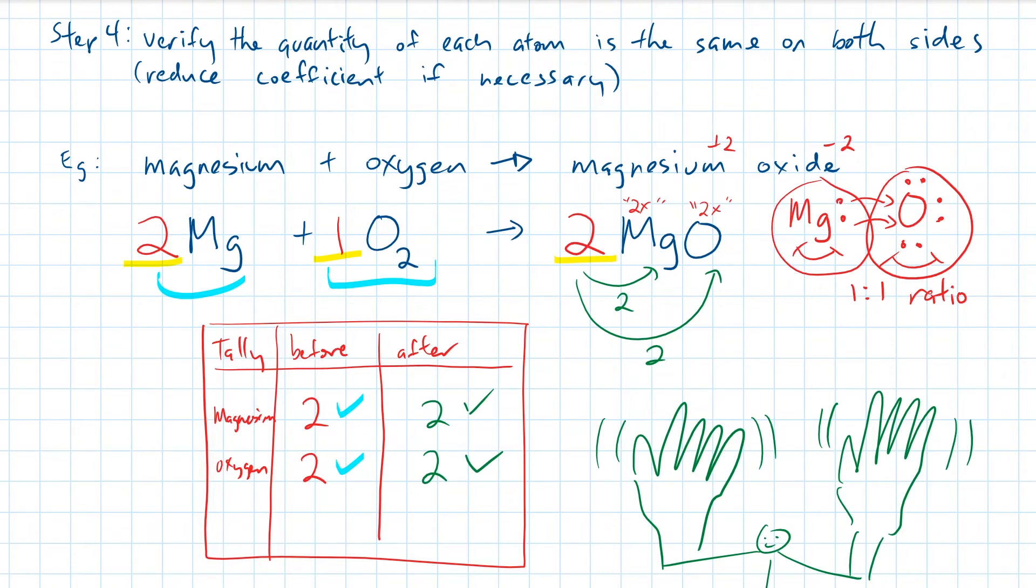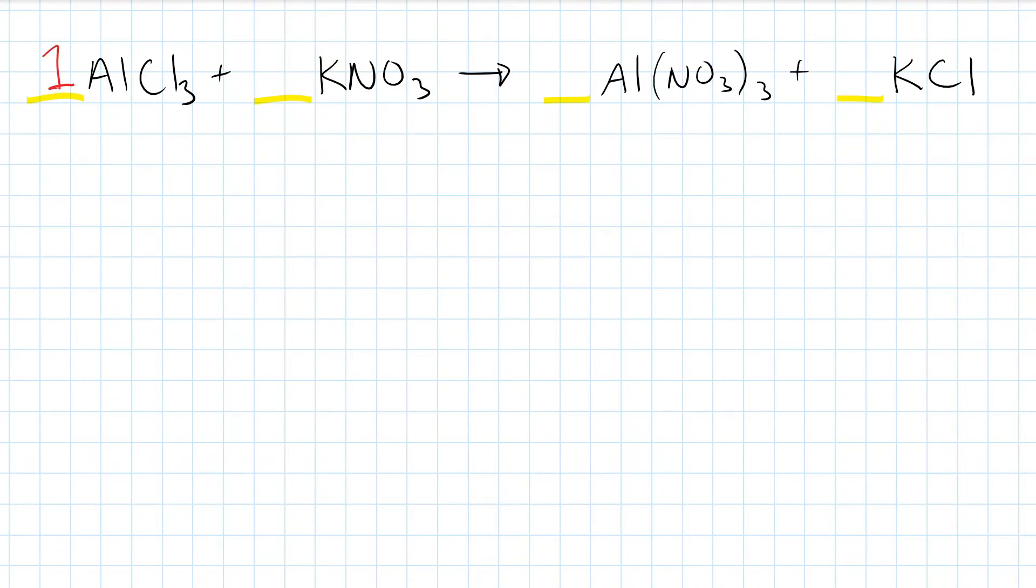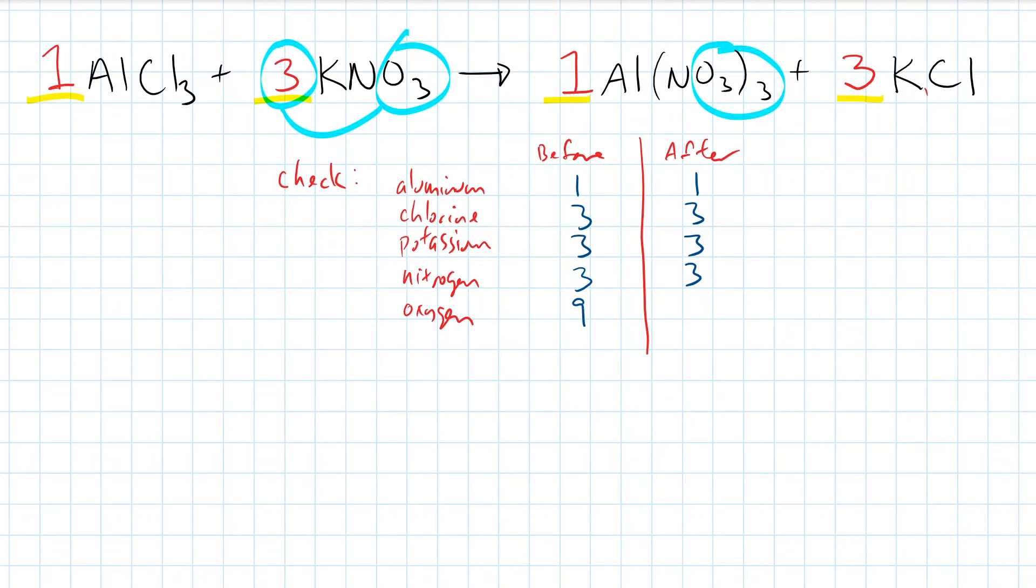Since balancing chemical reactions is quite challenging when you're new at it, let's practice through a few more problems. If you don't know where to start, just start with 1 at the beginning. However, you may need an eraser later on if your assumption is wrong. If we assume 1 aluminum at the beginning, we will need 1 aluminum at the end. Placing a 1 at the beginning also affects the quantity of chlorines. So if we have a triplet of chlorines at the beginning, we'll need 3 chlorines at the end. Placing the 3 at the end also forces the count of potassium to also be at 3. So we'll need 3 potassiums at the beginning. Lastly, double check your work. 1 aluminum at the beginning, 1 aluminum at the end. A triplet of chlorines at the beginning, 3 chlorines at the end. 3 potassiums at the beginning, 3 potassiums at the end. 3 nitrogens at the beginning, 3 nitrogens at the end. 3 times 3 which is 9 oxygens at the beginning, 3 times 3 which is 9 oxygens at the end. All looks good.